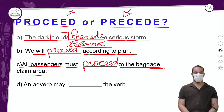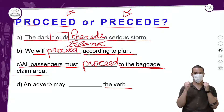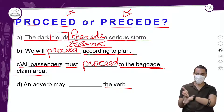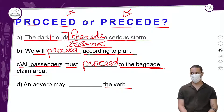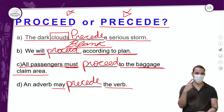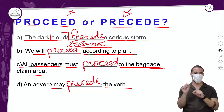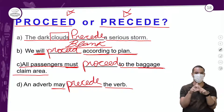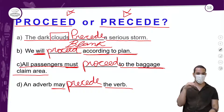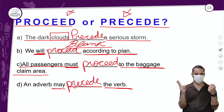E a última, letra D: 'An adverb may ___ the verb' — um adverbo pode o quê o verbo? Preceder. Então é 'precede'. Porém, presta atenção: o 'may' é um verbo modal, assim como o 'will', então o verbo vem na sua forma normal, sem nenhum S no final, sem absolutamente nada — porque está no verbo modal. 'An adverb may precede the verb' — um adverbo pode preceder o verbo.